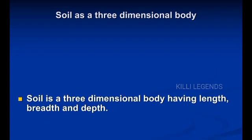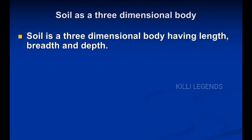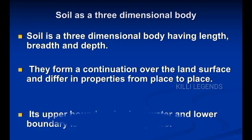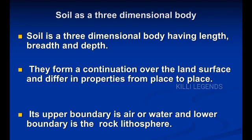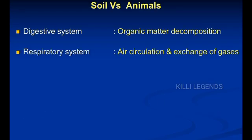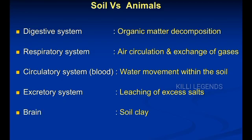The soil is a three-dimensional body. Why do we say that? Because the soil has length, breadth, and depth — three dimensions. The soil is a three-dimensional body which we consider in terms of horizontal and vertical distribution. It has differences in properties, that is why it is a three-dimensional body.